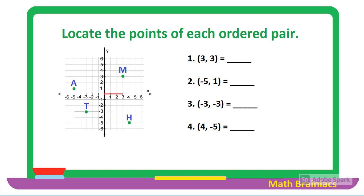For the first example, the ordered pair is (3, 3). The x-coordinate is positive 3, so starting from the origin we move 3 units to the right. The y-coordinate is also positive 3, so we move 3 units up. Therefore, the point of the ordered pair (3, 3) is point N. For the second example, the ordered pair is (-5, 1). Since the x-coordinate is negative 5, we move 5 units to the left. The y-coordinate is positive 1, so we move 1 unit up, and we reach point A.